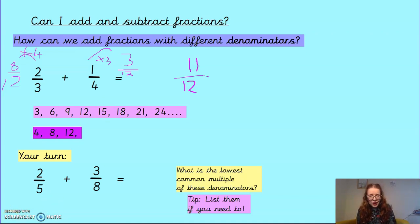Okay. Right. Your turn. Can you add 2 fifths and 3 eighths together? Remember to use the lowest common multiple. And you can list them out just like I did if you need to remind yourself of your times table knowledge. Okay. I will pause it. And when I unpause, there will be a magic answer there already.